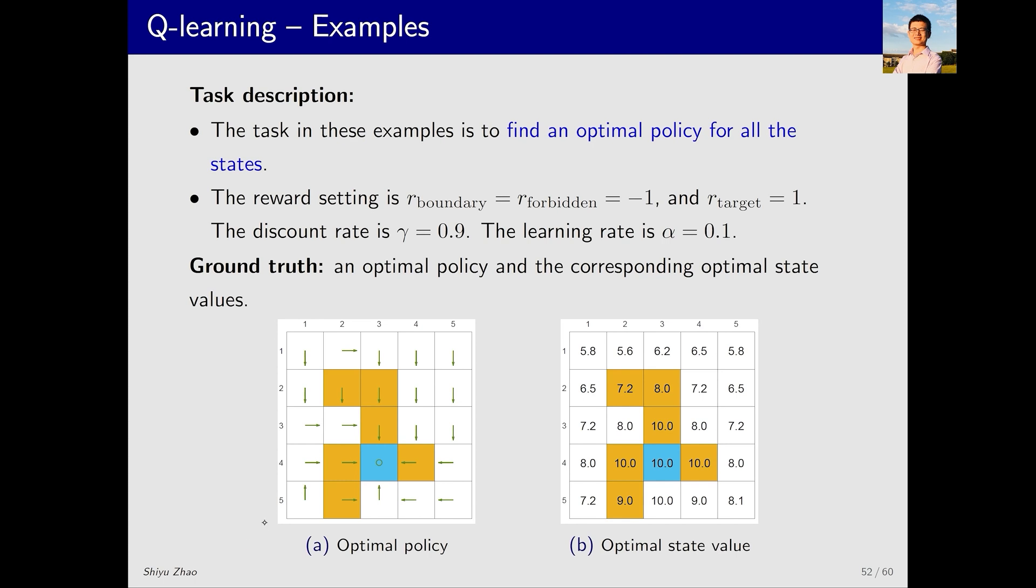The grid world example looks like this. First, we define the ground truth. This is the optimal policy and this is the corresponding optimal state values. After running Q-Learning, we will compare the resulting policy to this ground truth to see how well the algorithm performs.